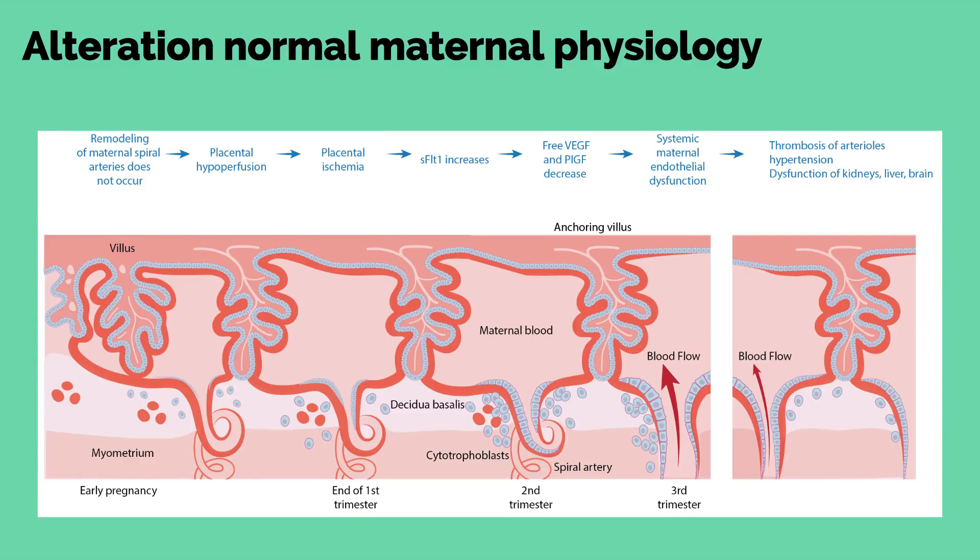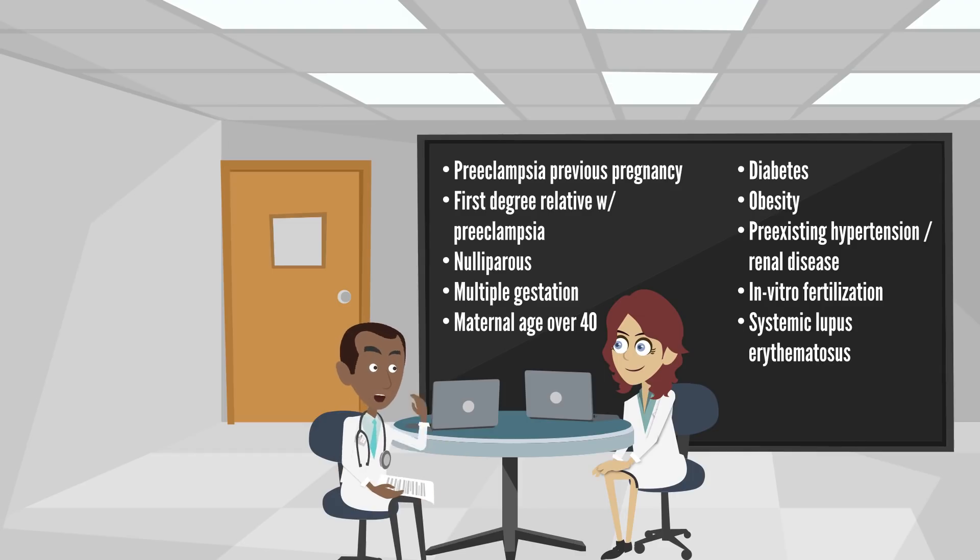For example, in the kidney, endothelial damage leads to inactivation of free VEGF endotheliosis and leads to proteinuria. There are several factors that predispose a patient to preeclampsia. These include preeclampsia in a previous pregnancy, a seven-fold increase; first-degree relative with preeclampsia, two-to-four-fold increase; primiparity; multiple gestation; maternal age over 40; diabetes; obesity; preexisting hypertension or renal disease; use of in vitro fertilization; and systemic lupus erythematosus.